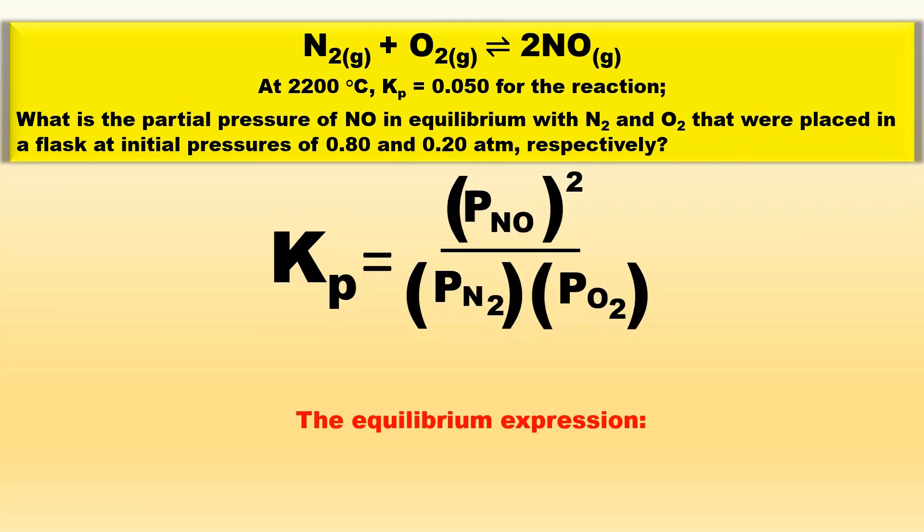Instead of a Kc expression we must write a Kp expression where Kp is equal to the partial pressure of NO squared divided by the partial pressure of N2 times the partial pressure of O2.